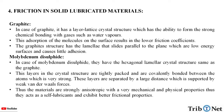In the case of molybdenum disulfide, it has a hexagonal lamellar crystal structure, the same as graphite. These layers in the crystal structure are tightly packed and covalently bonded between atoms, which is very strong. These layers are separated by large distances, supported by weak van der Waals forces. Thus, the materials are strongly anisotropic with very distinct mechanical and physical properties, and they act as a self-lubricant exhibiting better frictional properties.